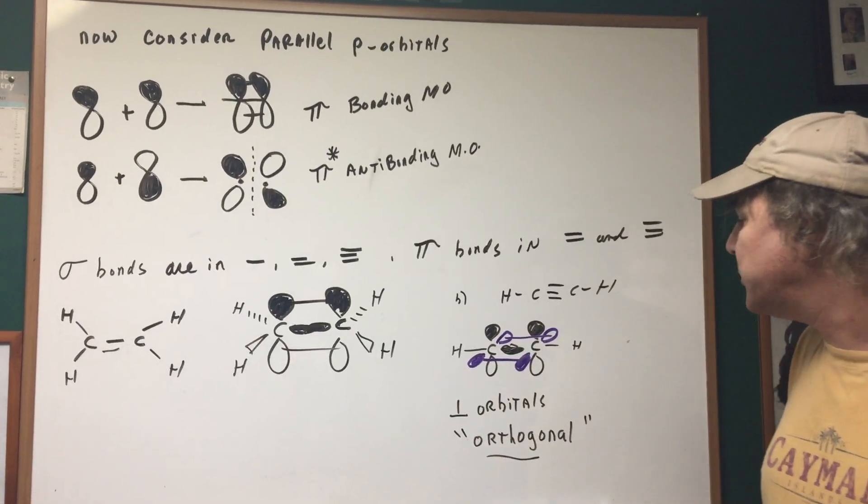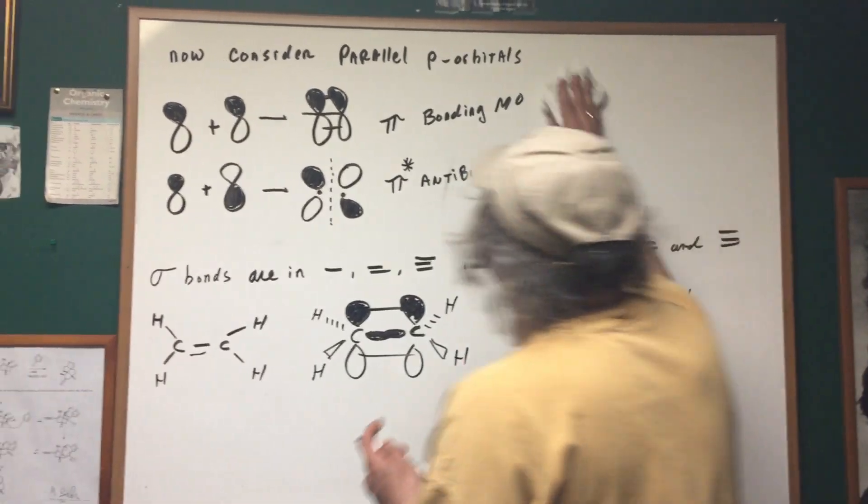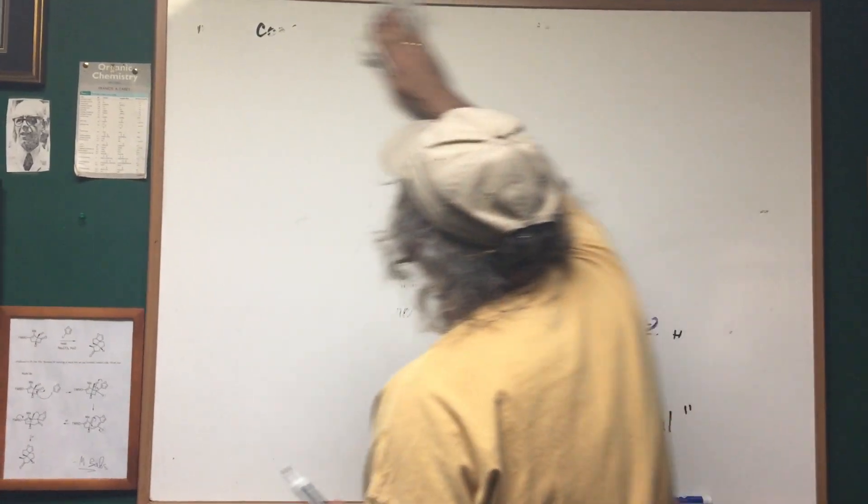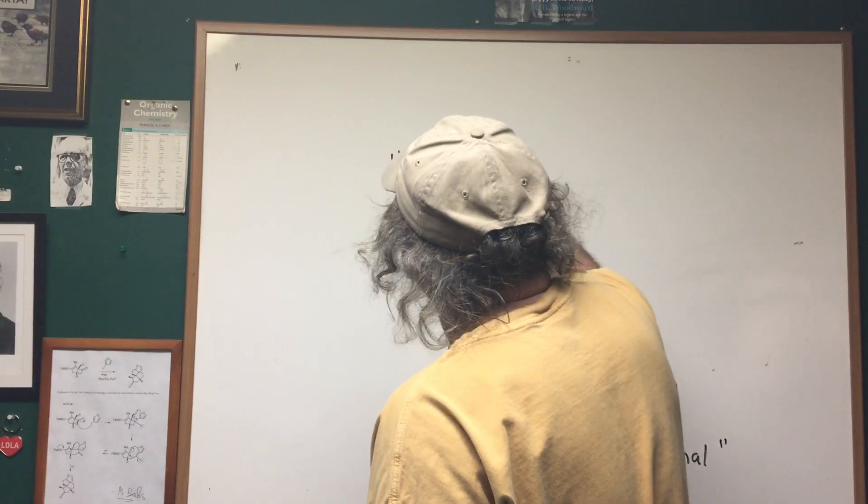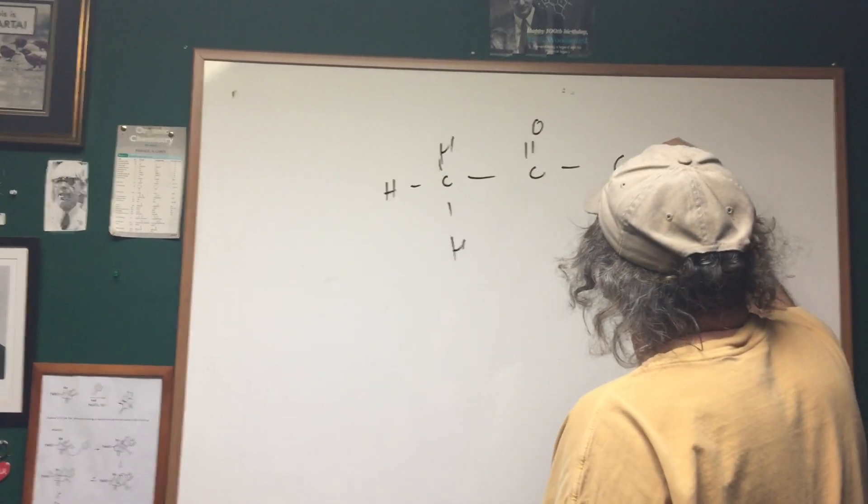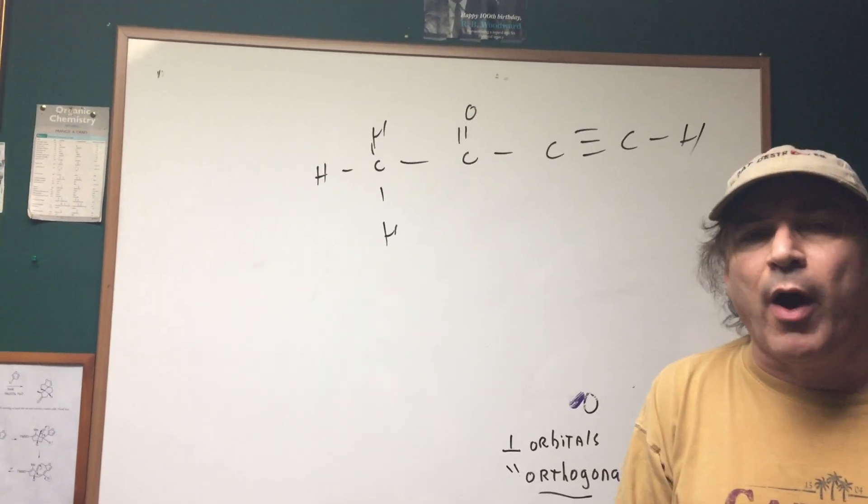We sometimes call this orthogonal. Let me do one more problem with you. So let me erase this. I'm going to do one more and let's show you a type of question that could land on the DAT. What if I gave you something like this and I said to you I want you to tell me how many sigma and pi bonds.